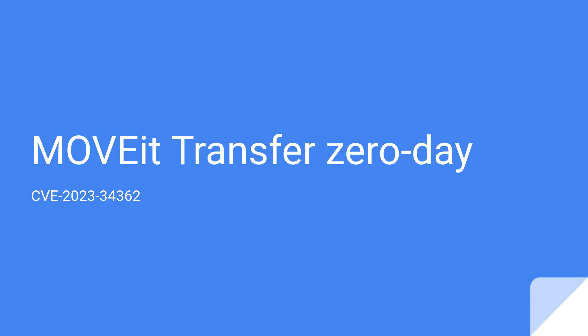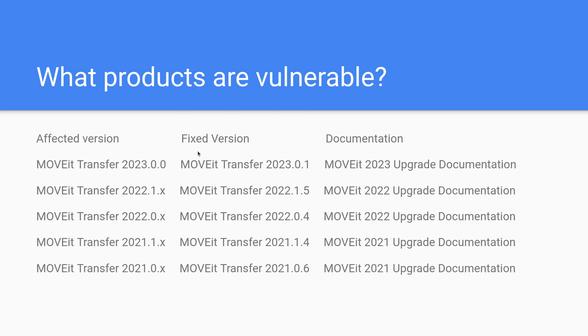In this video we are going to go over MOVEit, which is a managed file transfer software that a lot of big companies use to transfer files. There is a zero-day being exploited right now in the wild — they gave it CVE-2023-34362. Let's go over how you can be protected, which versions are vulnerable, how to patch it, and all that good stuff.